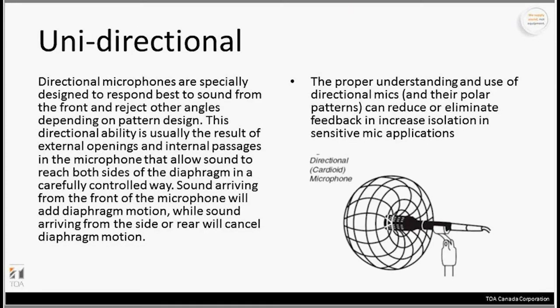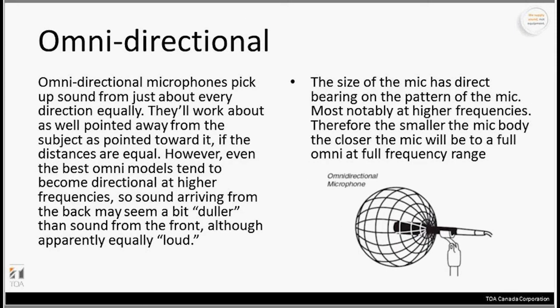An omnidirectional microphone application is a lavalier-style microphone clipped on your collar in a portable wireless scenario — public speaking, house of worship. Sometimes the microphone will be pointing up toward the mouth, sometimes pointing down, so an omnidirectional microphone picks up all the way around, giving better coverage for the voice since you're not quite sure how it will be clipped on to that person.